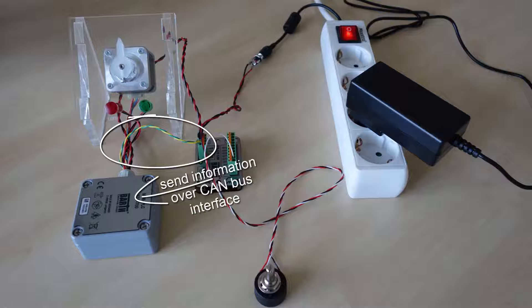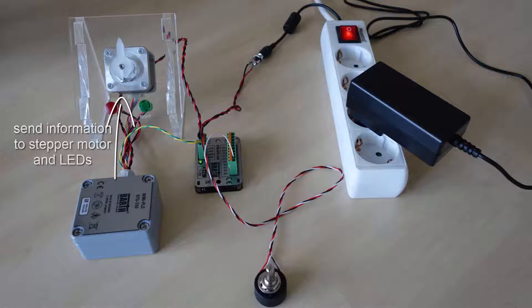The STG 700 STEP will transmit the received information to the motor. Now the LEDs which are connected to the STG 700 will light up depending on the rotation direction.